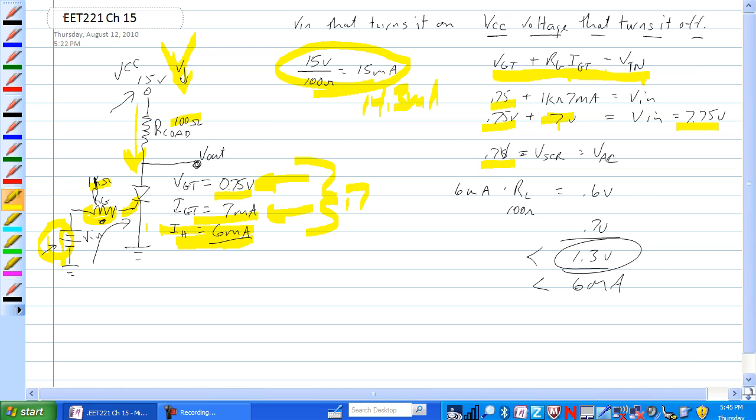So 6 milliamps times 100 ohm is 0.6 volts plus the 0.7 volts gives us 1.3 volts. So when VCC drops below 1.3 volts, then this SCR will shut off. Or if you use one of the other methods to shut it off, it will also shut off.